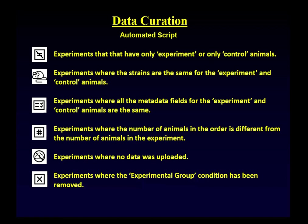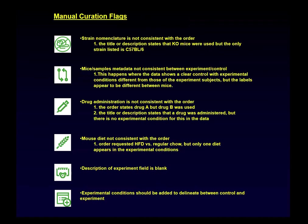Beyond the automated script, there are manual curation flags for things the automated process can't address. For example: strain nomenclature not consistent with the order; mouse metadata inconsistent between experiment and control; drug administration not consistent with the order — the order said drug A but drug B was uploaded, or a drug was mentioned but no experimental condition specifies what it was; and mouse diets not consistent with the order, such as the order specifying high-fat diet but the uploaded diet is not high-fat.